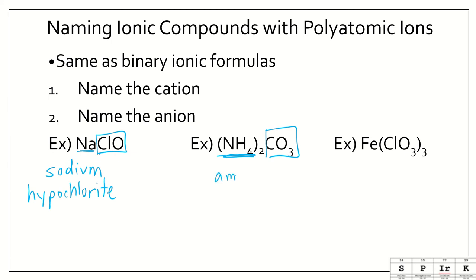So the cation is ammonium. And now when we name them, we don't need to say how many there are. So when we name them, we don't need to say ammonium 2. It's just ammonium carbonate.